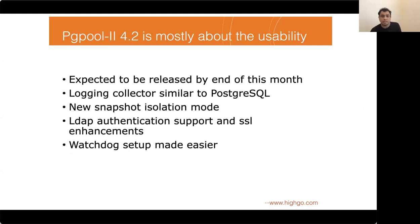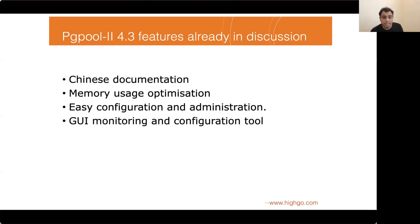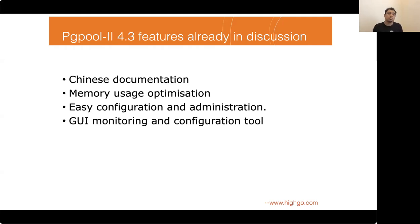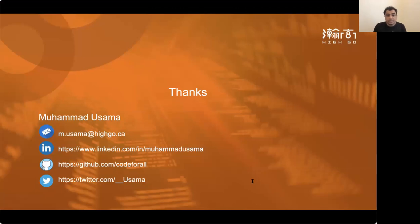The current version's main focus was usability improvement. Looking ahead, version 4.3, the current development version, has several things in the pipeline: Chinese documentation — currently documentation is available in Japanese, English, and partial French, and the team is now focusing on adding Chinese; memory usage optimization; easier configuration and administration; and a new GUI monitoring and management tool for pgpool2, which is a big project that will hopefully be completed before version 4.3 releases.